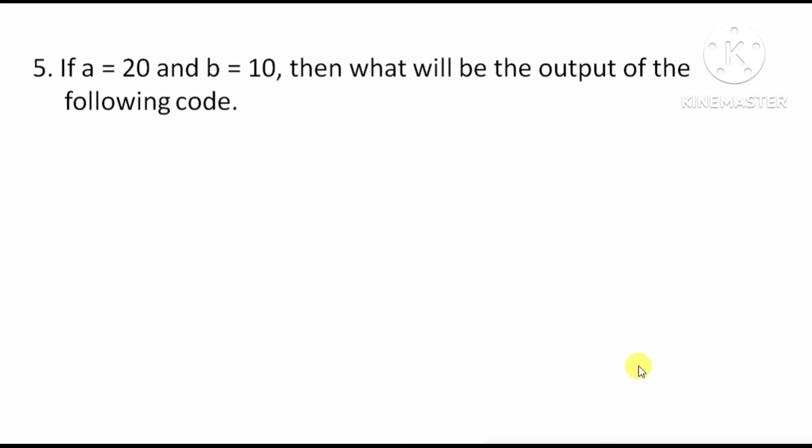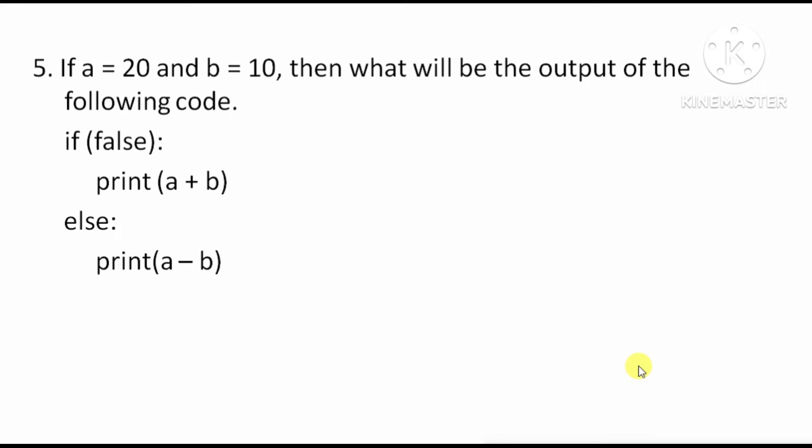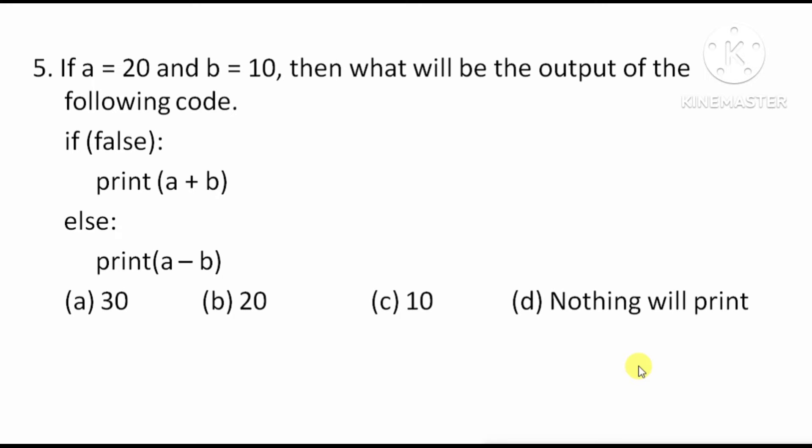Next question: if a equals 20 and b equals 10, what will be the output of the following code? Option A: 30, Option B: 20, Option C: 0, Option D: nothing will print.